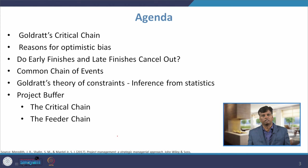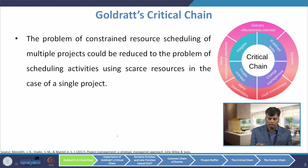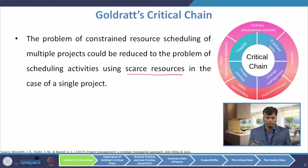First, we will see what is Goldratt's critical chain. The problem of constrained resource scheduling of multiple projects could be reduced to the problem of scheduling activities using scarce resources in the case of a single project. In a project there may be different resources, but if you focus only on the scarce resources, it will be easy for scheduling the whole project.